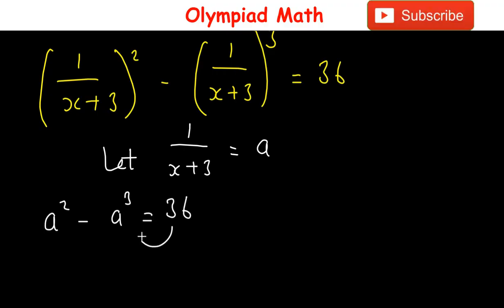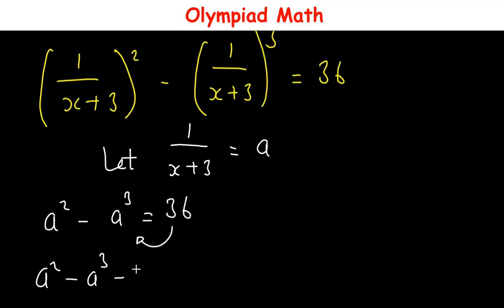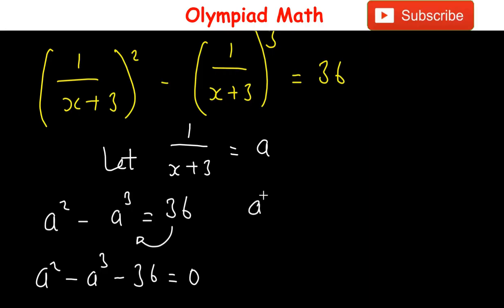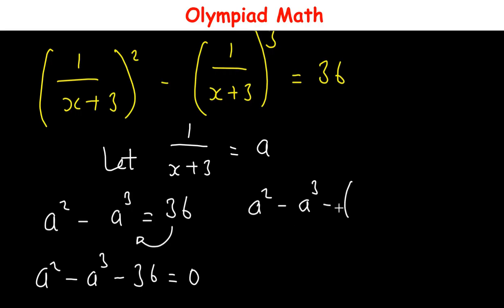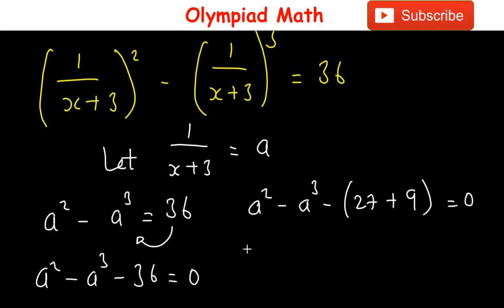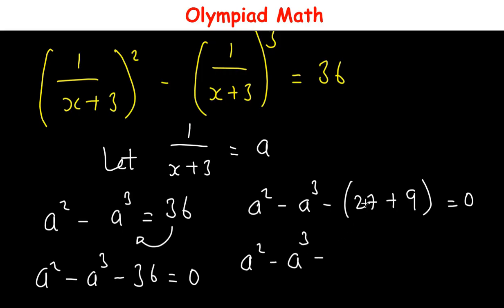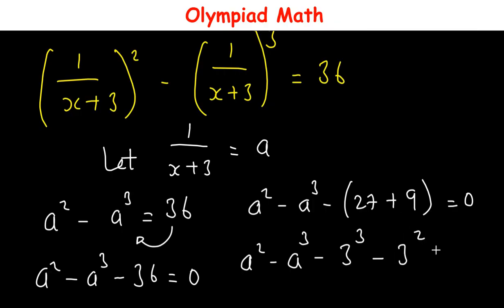Moving 36 to the left-hand side, we have a² - a³ - 36 = 0. This can be written as a² - a³ - (27 + 9) = 0, where 27 = 3³ and 9 = 3².